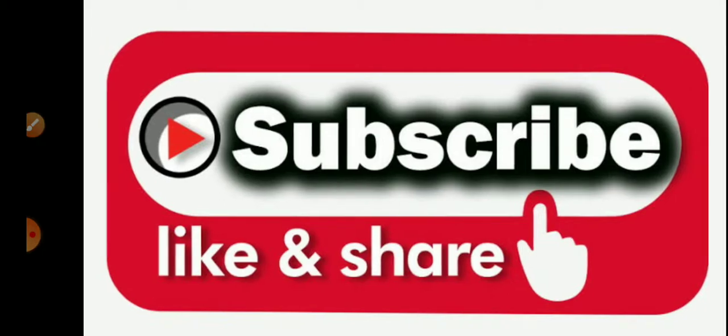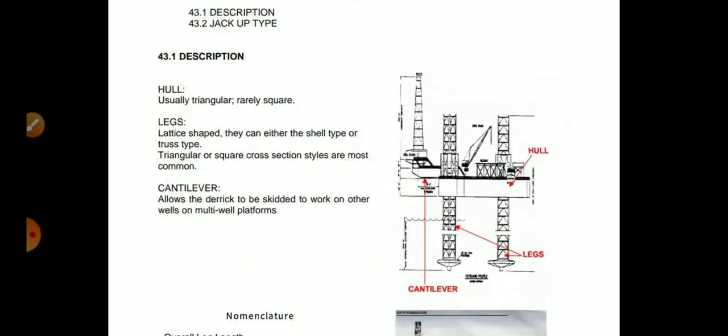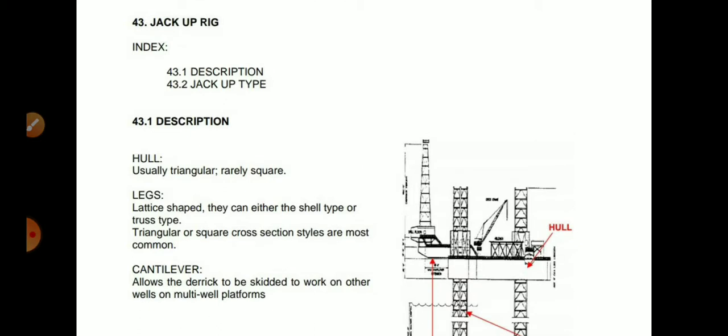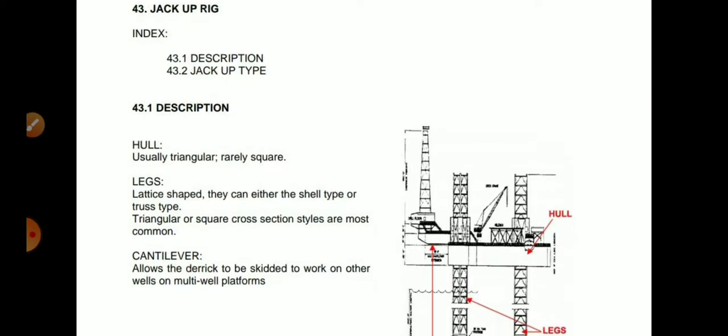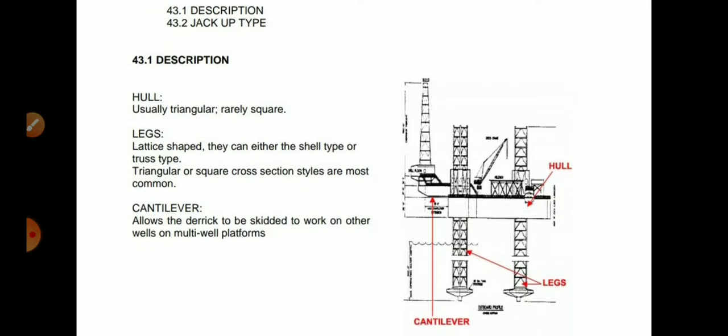Let's go to the topic. Here you see on the right side there is a rig having a cantilever, legs, and hull. What is the description of the jackup rig? The hull is usually triangular, rarely square. The legs are lattice-shaped and can either be shell type or truss type; triangular or square cross-section styles are most commonly used.